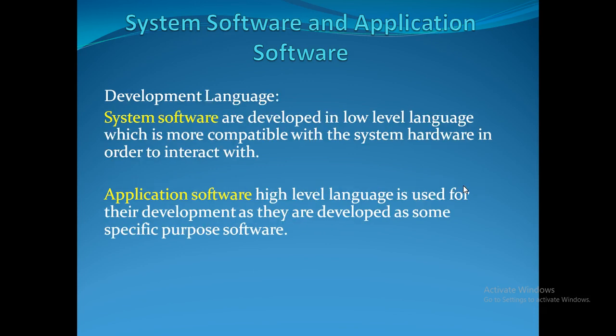Regarding the languages used for developing these softwares: system softwares are developed in low-level languages because they communicate with the machine, which requires a language more compatible with system hardware. Application softwares are developed in high-level languages like C, C++, Java, .NET, etc., as they are developed for specific purposes.